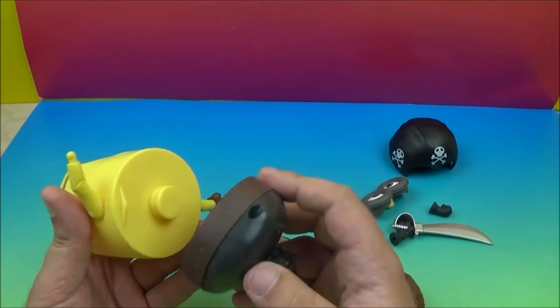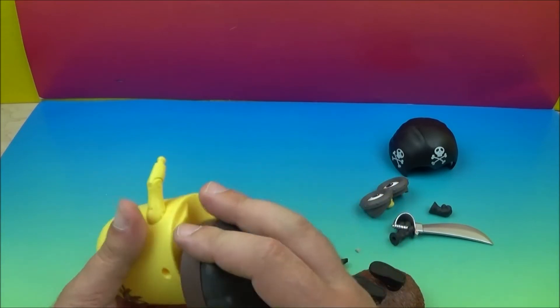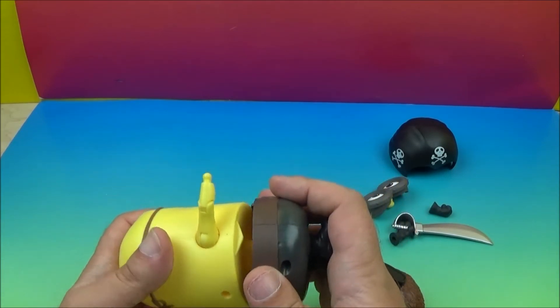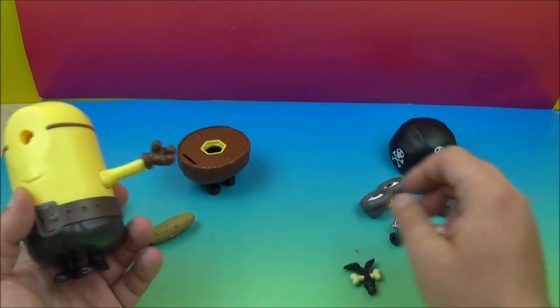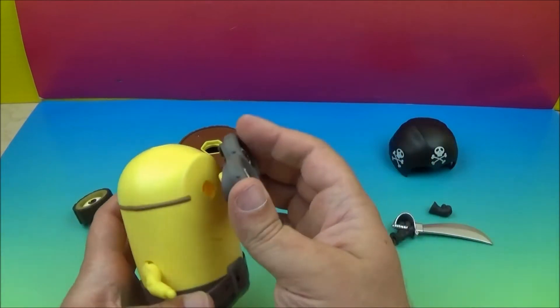So put the new feet on for the Pirate. Backwards. Try to get it on right. There we go. Getting the parts positioned. Put the goggles on.